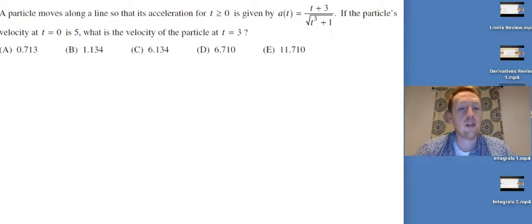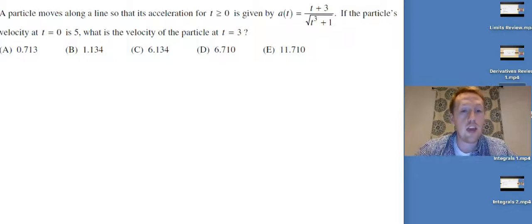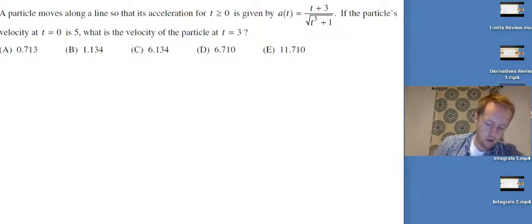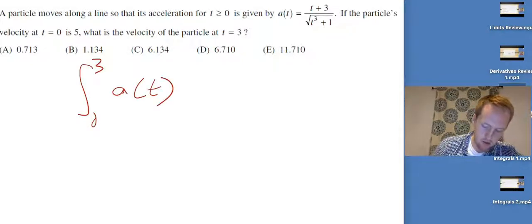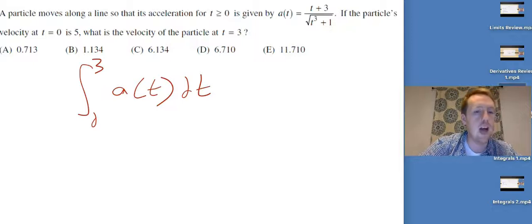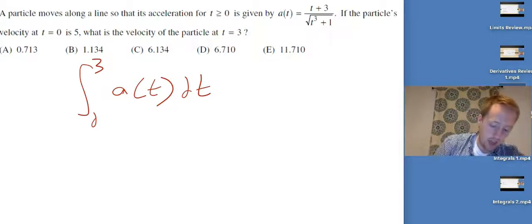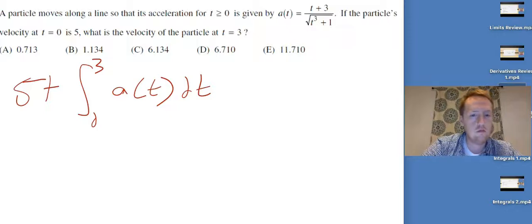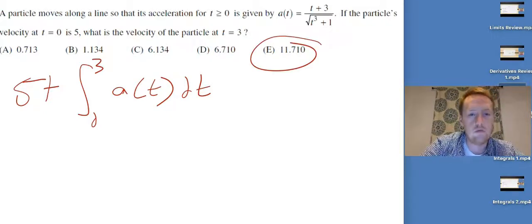A particle moves along a line so that its acceleration is given by a(t) = 6. If the particle's velocity at t = 0 is 5, what is the velocity at t = 3? I need to go from acceleration to velocity, so I'll integrate. The t values I know about are 0 and 3. Integrating gives the change in velocity, so I need to add the initial condition. Putting that in the calculator gives 11.710.